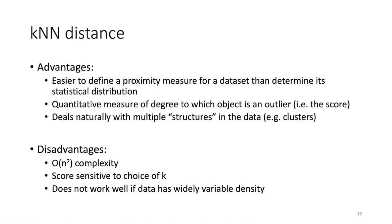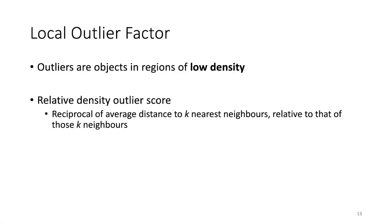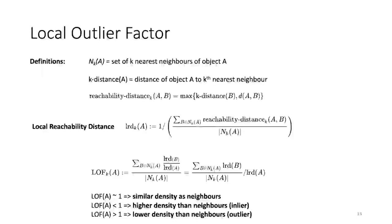The advantages of the KNN algorithm are that the proximity measure — Euclidean distance — is easy to define, and we get a continuous score rather than a binary output. However, it struggles when the data has widely variable density. That's why we might prefer the local outlier factor algorithm, where outliers are objects not only if they're far away from others but if they are in regions of low density.